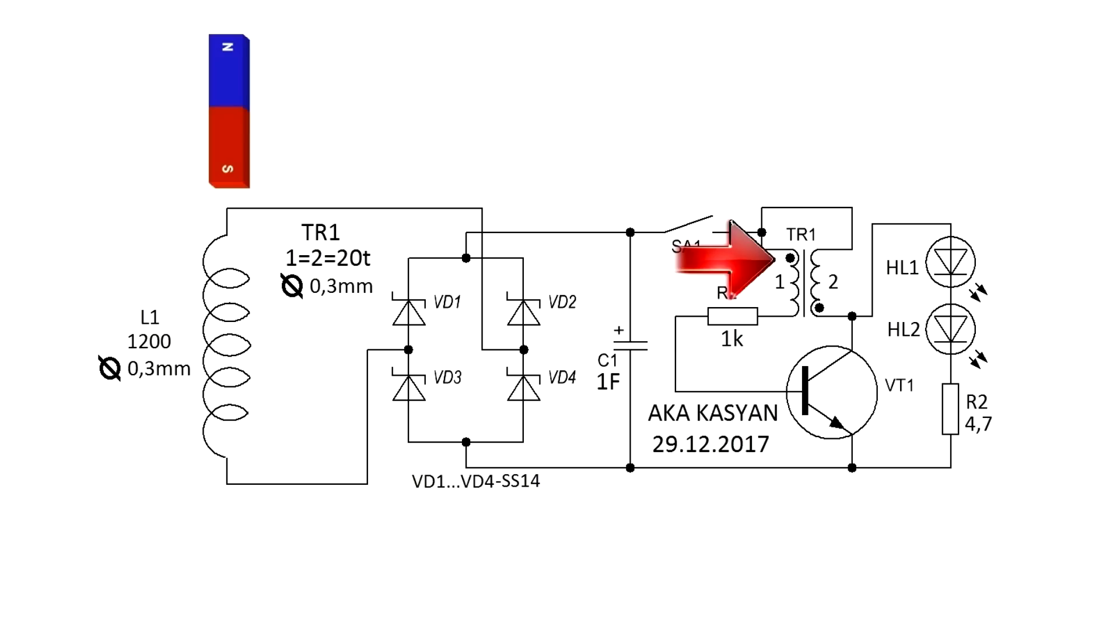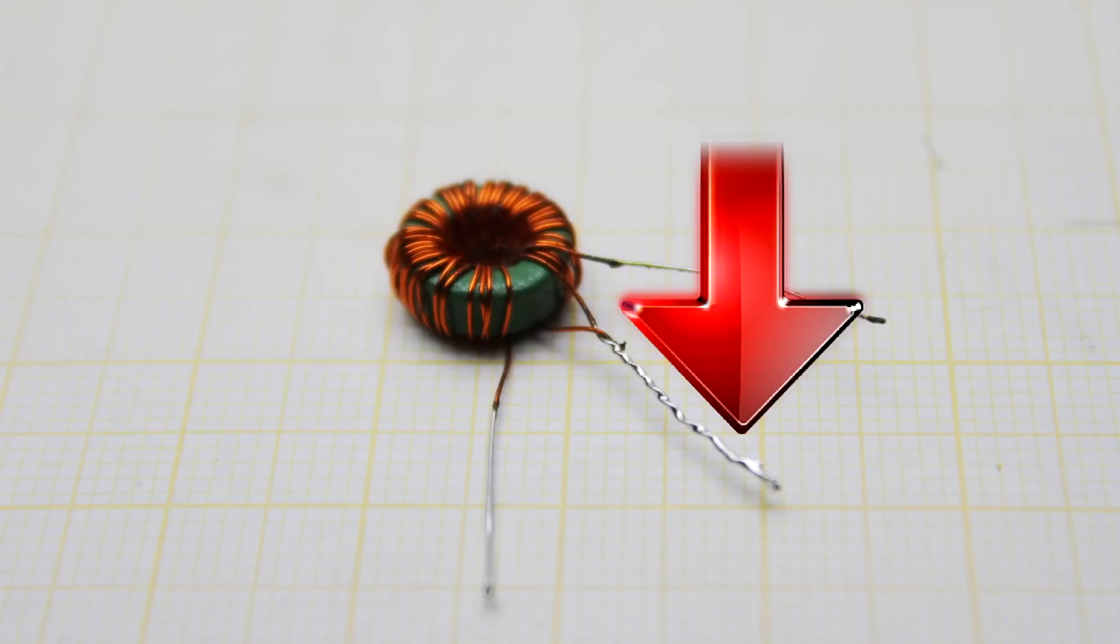Next, the windings must be phased. The beginning of the first winding connects to the end of the second winding, thereby obtaining the midpoint.